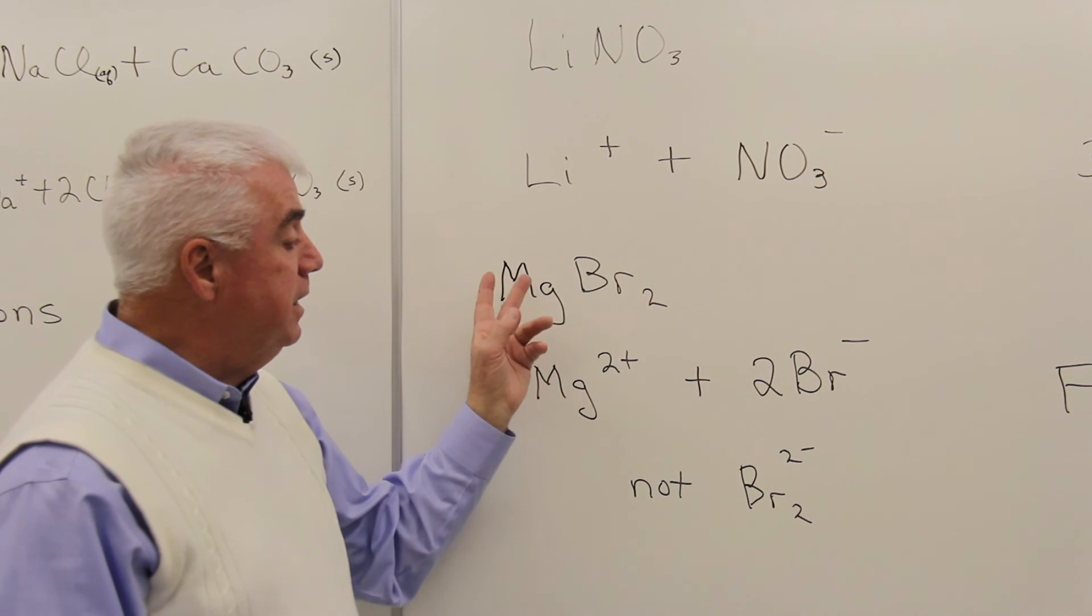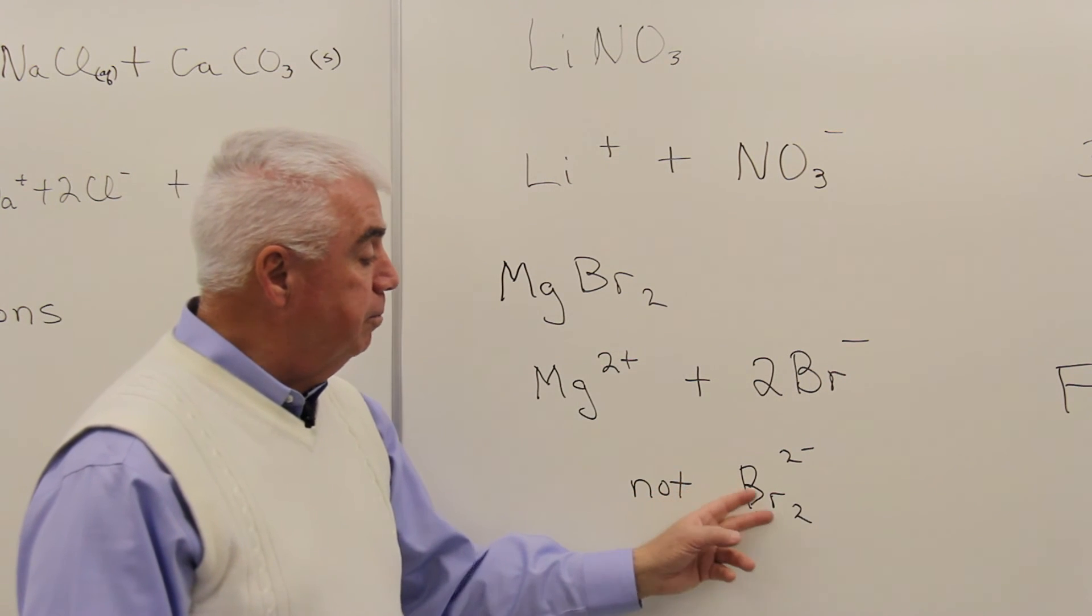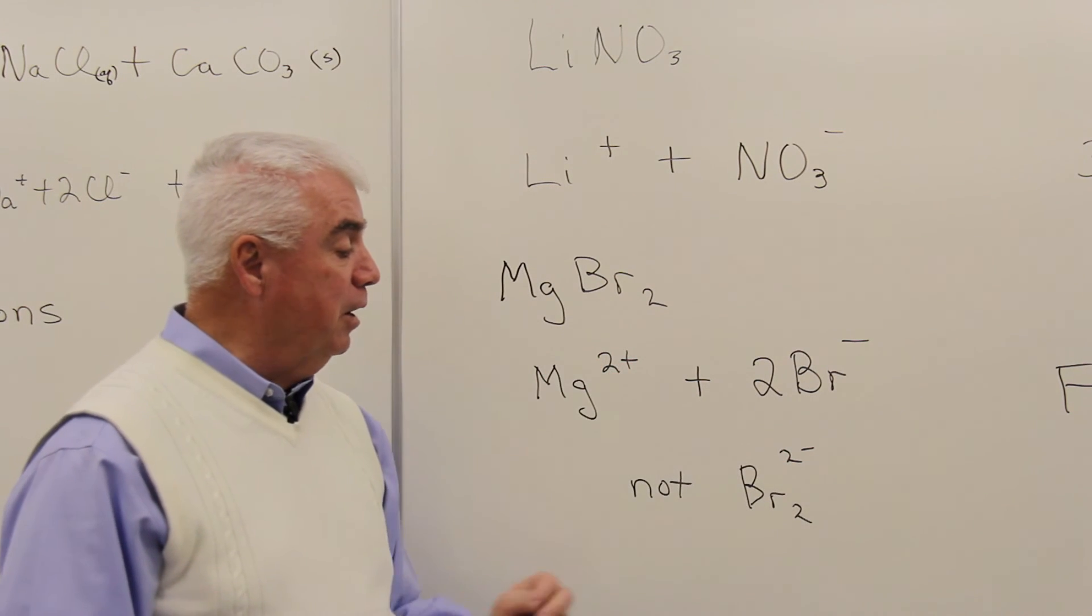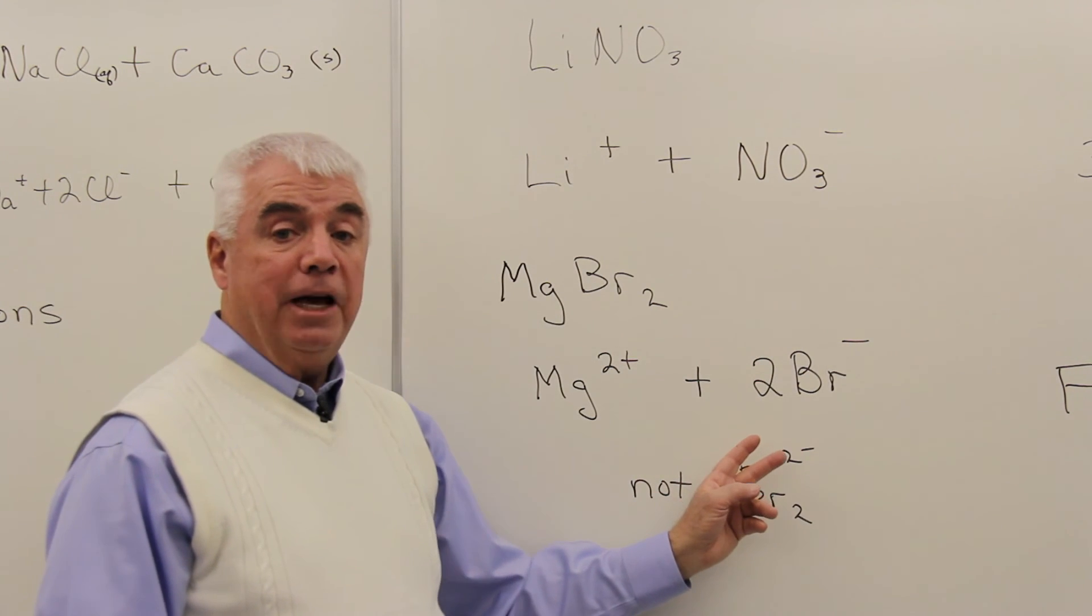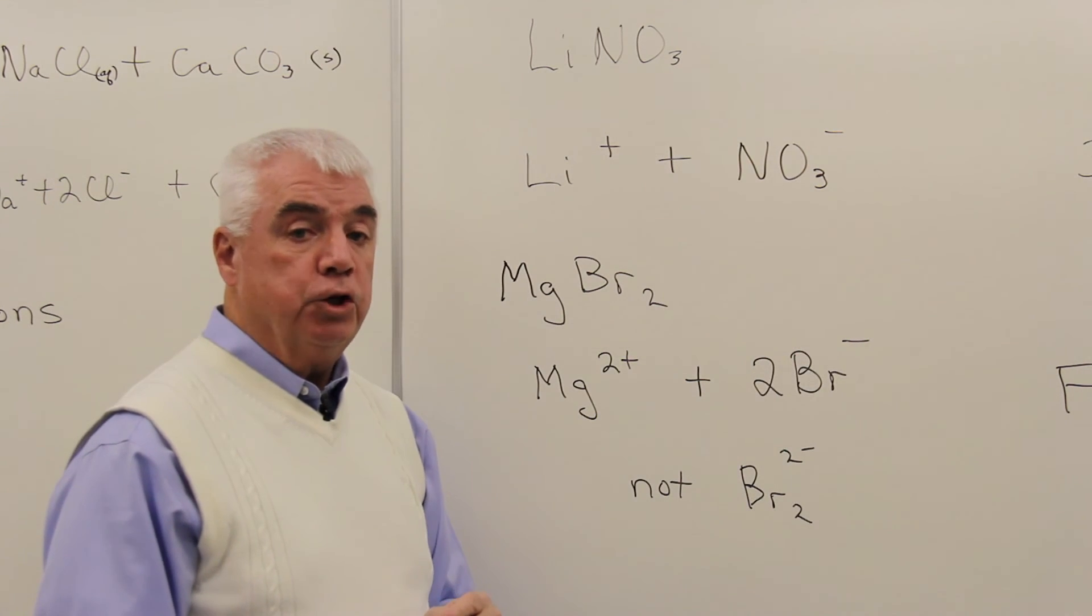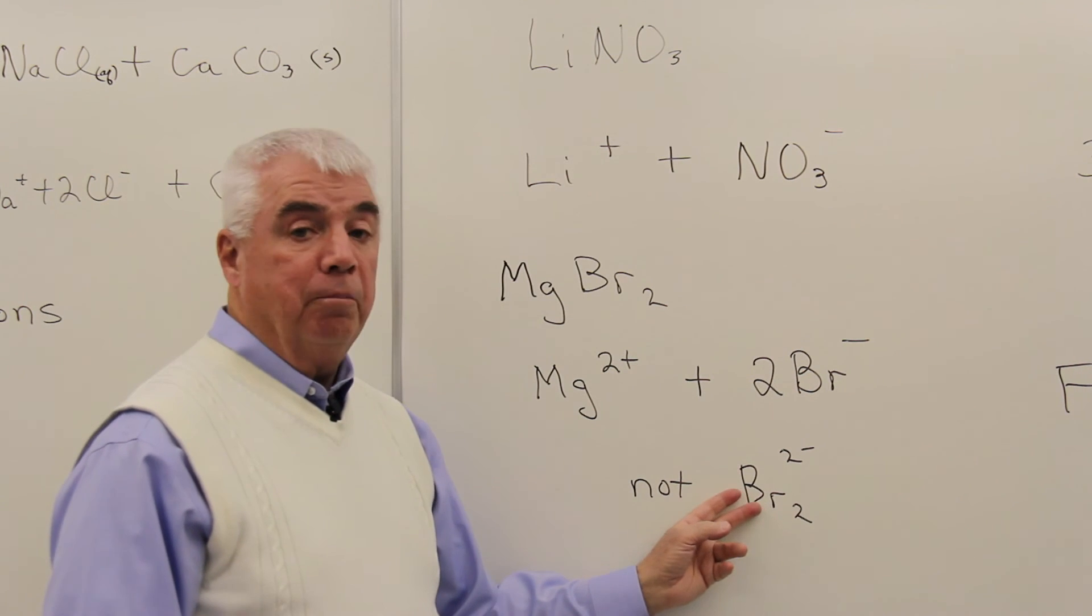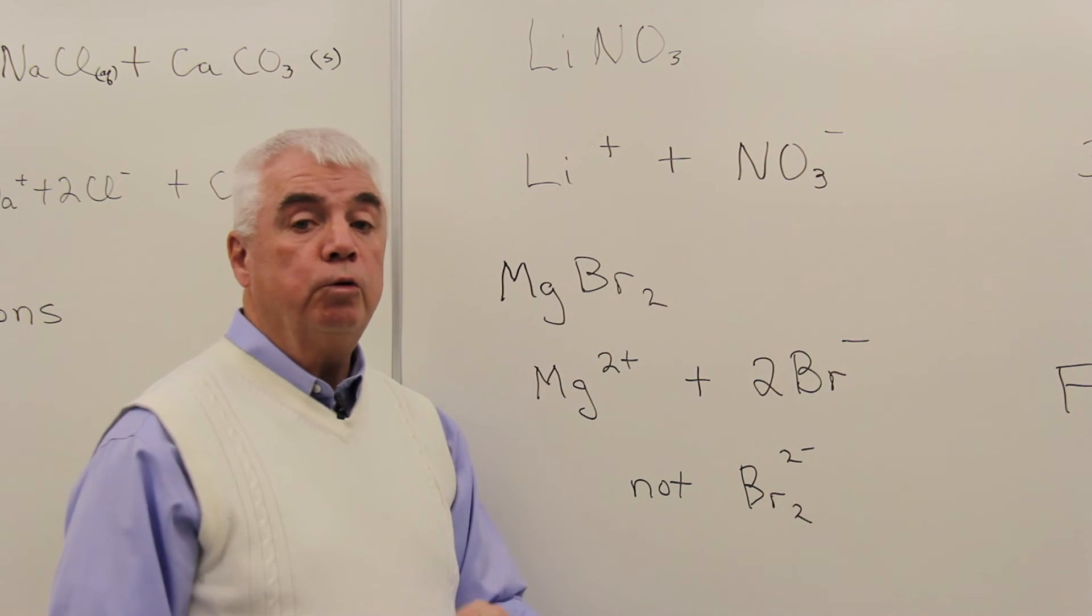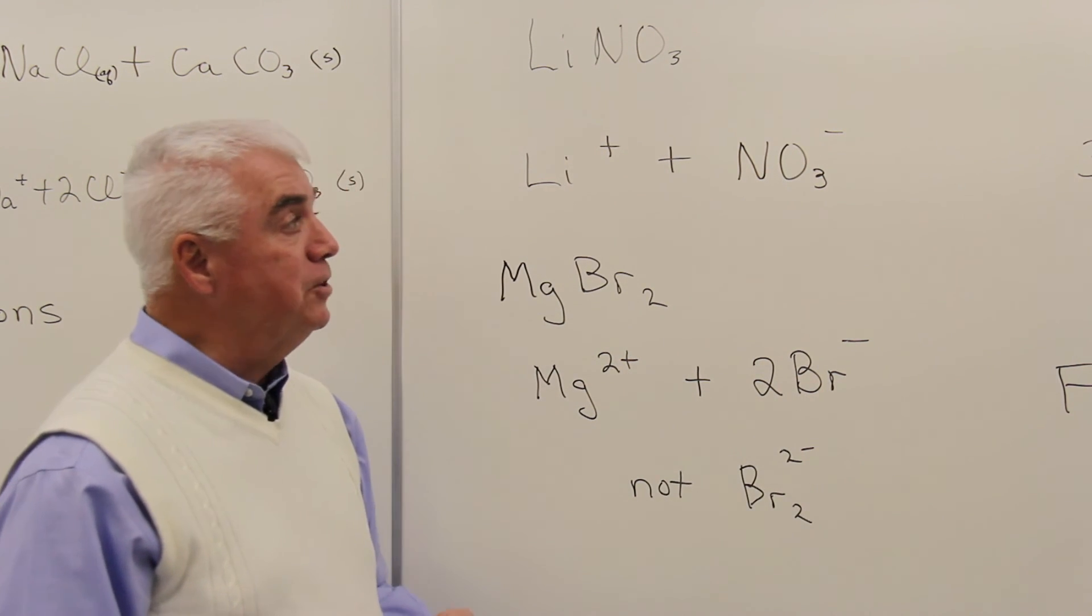Now, there might be a temptation to balance this magnesium 2 plus with Br₂ 2 minus. Well, the charges would balance, but this really doesn't work. Because of the octet rule, bromine likes to be by itself and have a negative 1 charge. If bromine does come together with another bromine to form Br₂, which obeys the octet rule, then it has no charge. So Br₂ 2 minus would be an easy error to make.